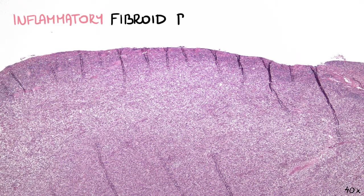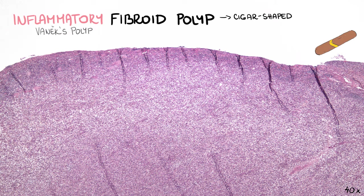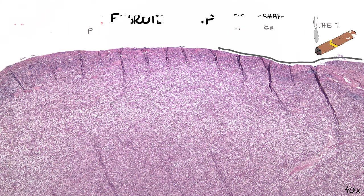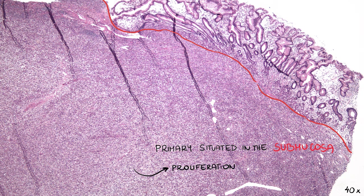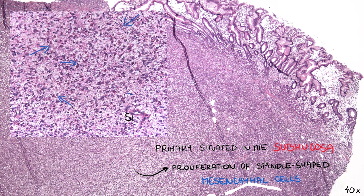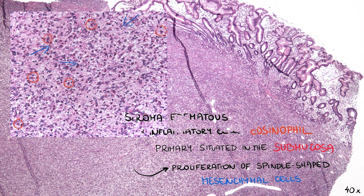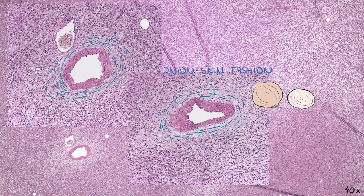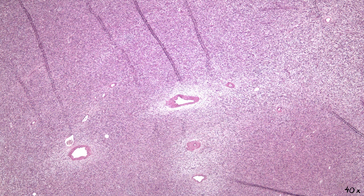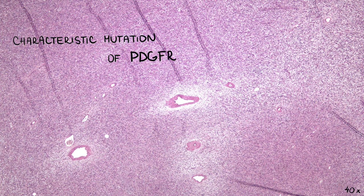Inflammatory fibroid polyp, or so-called Vanek's polyp, usually takes the form of an elongated protruding cigar-shaped polyp with a characteristic small ulceration on the tip. On the microscopic level, this lesion is primarily situated in the submucosa and consists of proliferation of spindle-shaped mesenchymal cells. The stroma is edematous and rich in inflammatory cells with a majority of eosinophils. The cells are arranged concentrically around the vessels in a so-called onion skin fashion. For a time this polyp was considered a reactive non-neoplastic lesion, but in recent years a characteristic mutation of the PDGFRA gene was found, supporting the neoplastic origin of this lesion.